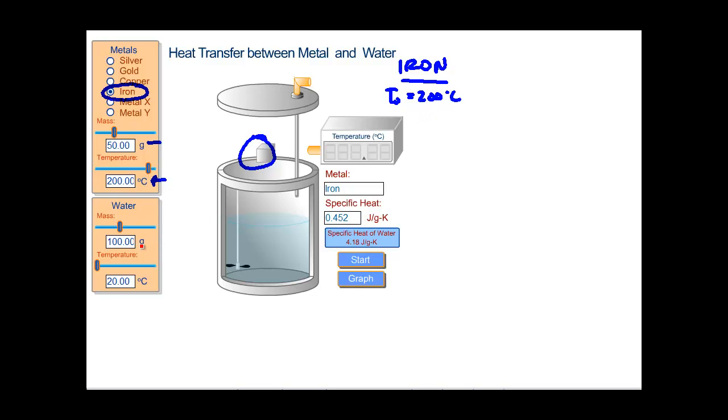I'm going to drop it into 100 grams of water. That's here. That's at 20 degrees Celsius. For the water, our initial temperature is going to be 20 degrees Celsius. And when we drop it in, this is going to measure the temperature of the whole thing. We're going to see what happens with that energy stored in the iron.